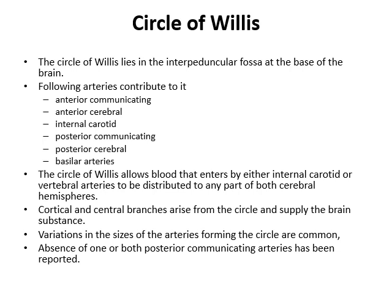When we say cerebral circulation, we always think of the circle of Willis. It lies in the interpeduncular fossa at the base of the brain, and the following arteries contribute to it: the anterior communicating artery, the anterior cerebral artery, the internal carotid artery, the posterior communicating artery, the posterior cerebral artery, and the basilar artery. All of these form the circle of Willis, which allows blood to enter from either the internal carotid or the vertebral arteries and distribute to any part of the cerebral hemispheres. Cortical and central branches arise from the circle and supply all the substance.